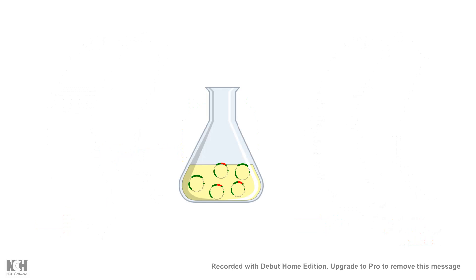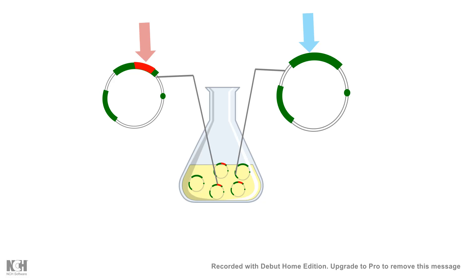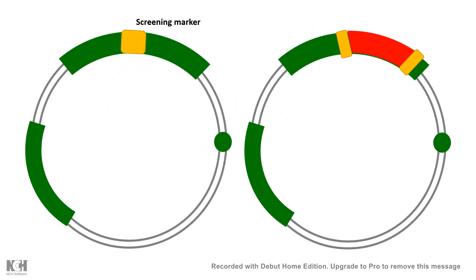This removes bacteria that have not taken up the plasmid. However, a second problem remains: even after digestion and ligation, some plasmids can self-ligate — they lack the gene of interest and are just a self-ligation product. How do we differentiate bacteria carrying the plasmid with the gene of interest from those carrying the self-ligated plasmid?